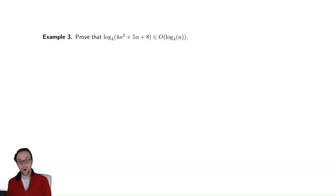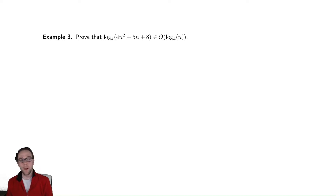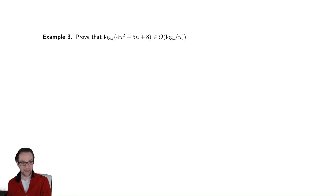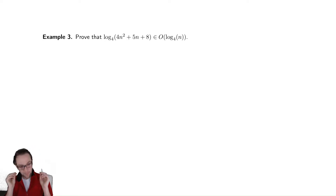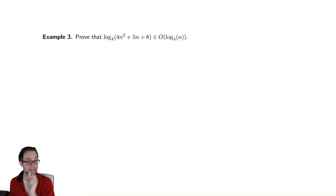Our next example is hopefully a little less obvious in terms of what's going on and how we're going to deal with it, because this log kind of throws a wrench into things. We have log of some quadratic thing is in O of log of n, and you might look at that and say you don't even know if that's true to begin with. We already know how to deal with polynomials, so why not do the exact same thing we did before?